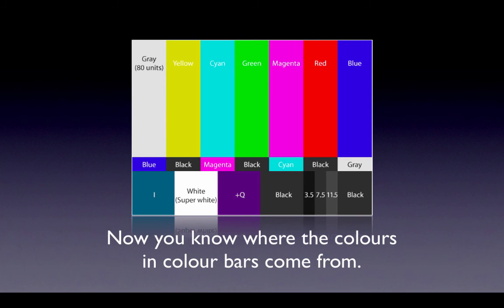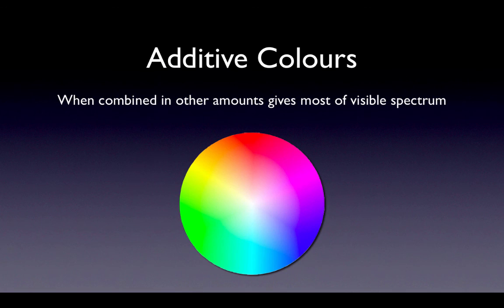And so now you know where the colors in color bars come from. RGB can also be combined in different ratios to give just about every other color in the spectrum of visible light, which was another reason they were a good choice for television and video production.